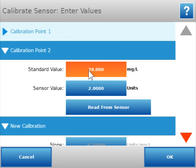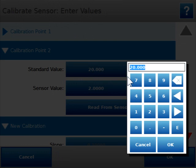We can now enter our calibration value into the standard value. Again, for my sample, it was 9.1 milligrams per liter.